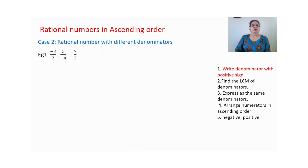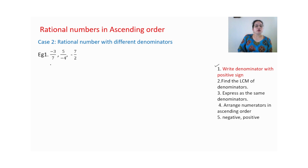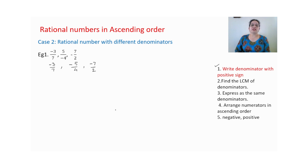Again, arrange rational numbers in ascending order. First we check the denominators — whether positive or negative. If negative, we follow the first step: write it with a positive sign. So our rational numbers become minus 3 upon 7, then minus 5 upon 4, and the last negative number we write with numerator, so it becomes minus 7 by 2.